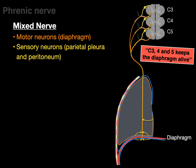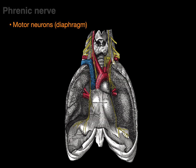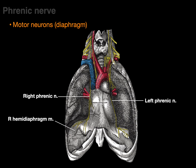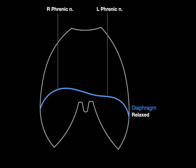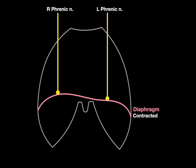We remember the levels because of this mnemonic: C3, C4, and C5 keeps the diaphragm alive. The right phrenic nerve innervates the right hemidiaphragm and the left phrenic nerve innervates the left hemidiaphragm. So the right and left phrenic nerves innervate their associated hemidiaphragms when the diaphragm contracts.